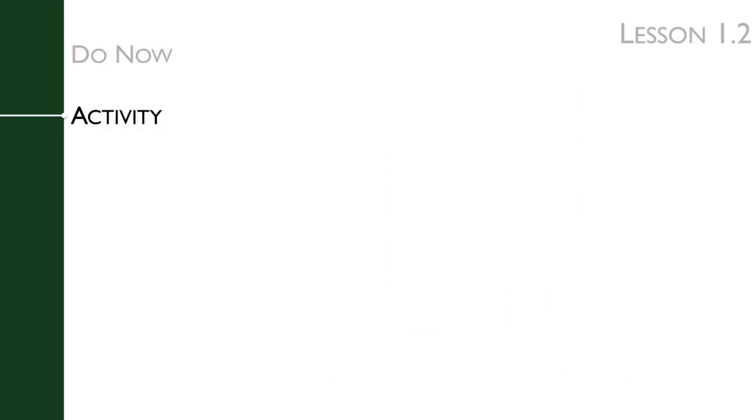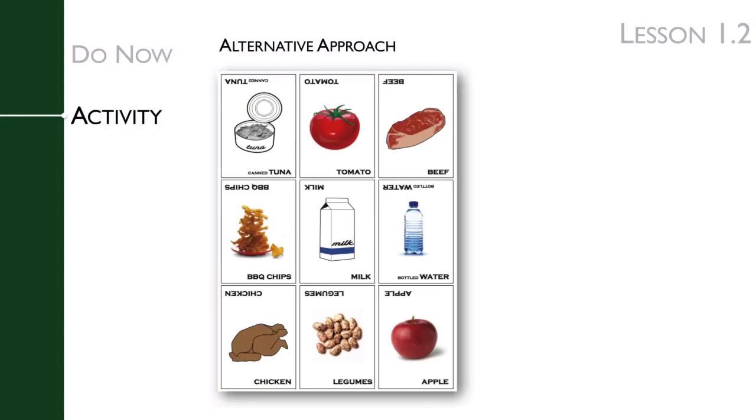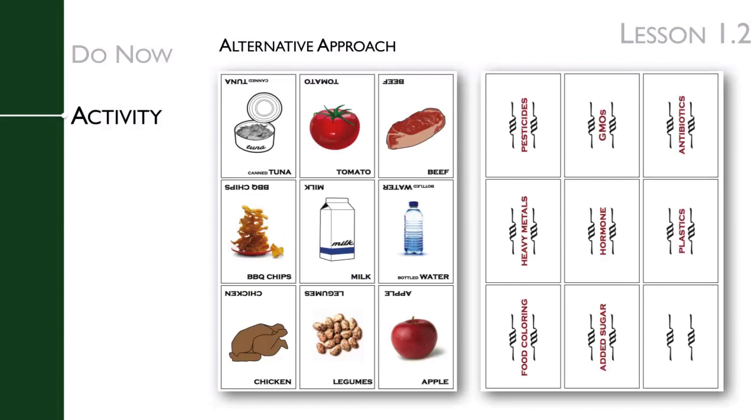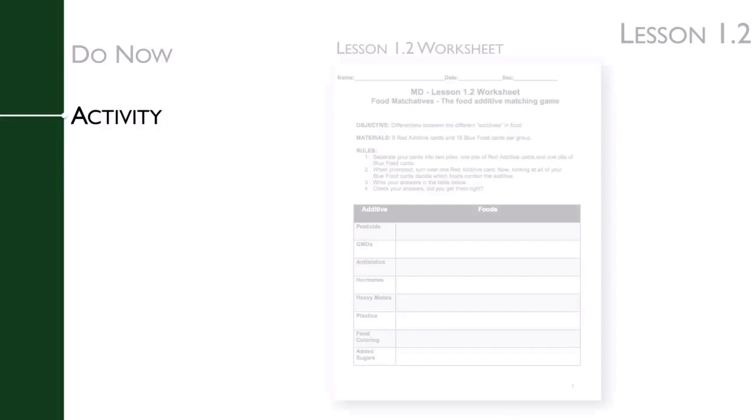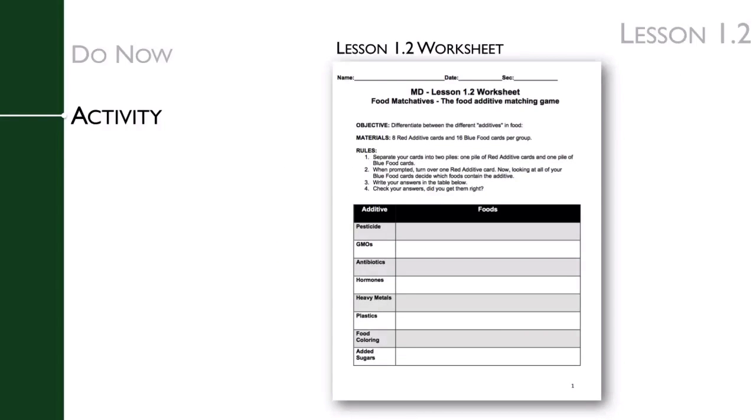An alternative approach to this lesson is to print out the two decks of cards that appear in the alternative approaches folder. One of these is a deck of food cards, and the other is a deck of additives cards. Students can match the additives in foods, filling out a worksheet in their own time before you review the answers together as a class.